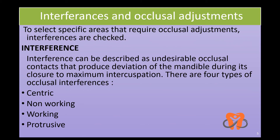In the previous lecture we discussed how to evaluate occlusion. After evaluating the occlusion, specific areas are selected that require occlusal adjustments, for which interferences are checked. An interference can be described as an undesirable occlusal contact that produces deviation of the mandible during its closure to maximum intercuspation. There are four types of occlusal interferences: centric, non-working, working, and protrusive. We will do these one by one.